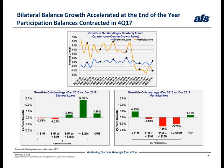When we segment the growth by various loan sizes, the bottom left chart shows that the bilateral loan growth for 2017 was driven primarily by increases in C&I loans greater than or equal to $5 million, with C&I loans greater than or equal to $25 million up 13.87%. For participations, the chart on the right presents the opposite trend. Here, balances decreased for the larger loan size segments, while the smallest loan size segment and CRE both reported higher balances. We also saw that only CRE balances increased for both bilateral loans and participations during 2017.